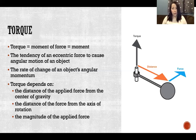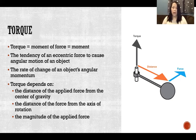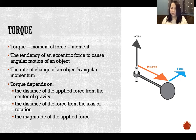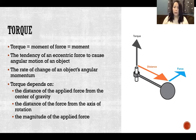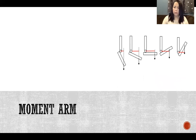How much torque there is depends on how far away we were from the center of mass. So it depends on three things: how far we are from the center of gravity, how far we are from the axis of rotation, and how much force is being applied. All of those things affect the amount of torque.